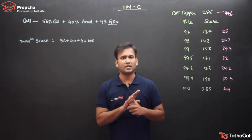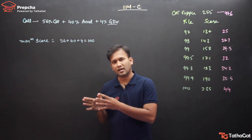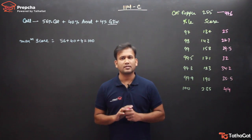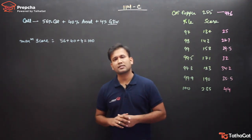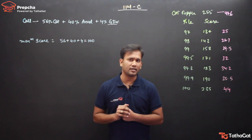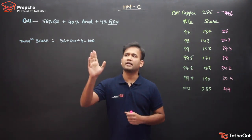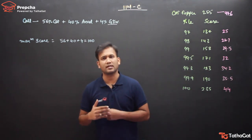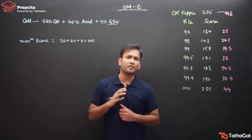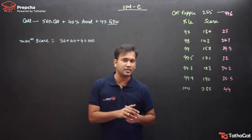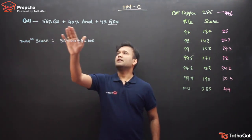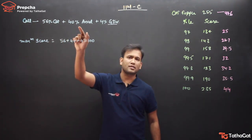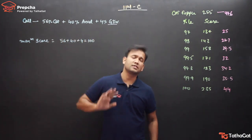One thing we should be clear about is that this criteria is for CAT 2019. It can be changed for CAT 2020. Every year, just before calls, the IIM call criteria is released. Now let's start understanding the components IIM Calcutta has given: 56% weightage assigned to CAT, 40% to academics, and 4% to gender diversity.